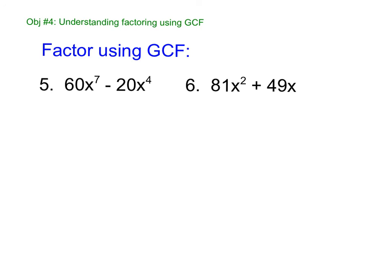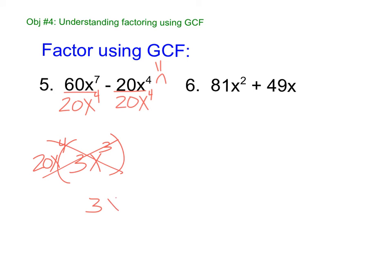Find your GCF. The GCF here is 20. And then take your smaller x, x to the 4th. Now this one a lot of kids make mistakes with. So 60 divided by 20 is 3x to the 3rd. And then they try to do that. What's wrong with that? This is sad. Even though those cancel, they don't cancel to 0. What do they cancel to? They cancel to 1. They cancel to 1, right? 20 divided by 20 is 1. So it's 3x to the 3rd minus 1 parentheses GCF out front. So be careful with that. That's a really common mistake. 20 divided by 20 is 1.